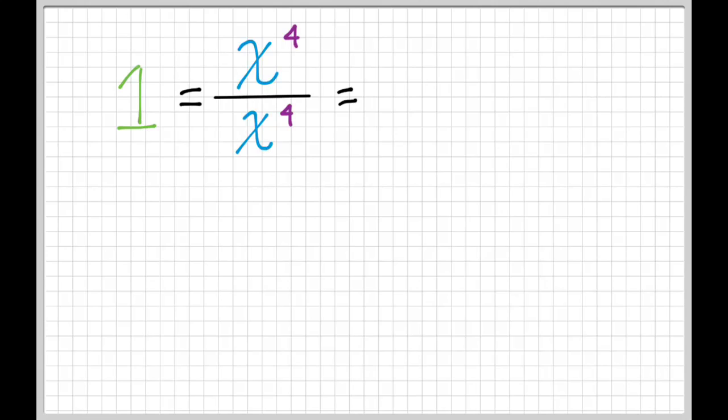But we know something else. We know that this can be written as x to the fourth minus four, because of index law two. We're dividing so we can subtract these powers, these indices. x to the four minus four. Which, four minus four, of course, equals zero. So this is a whole bunch of things, four different things. Four different ways of writing the same thing.